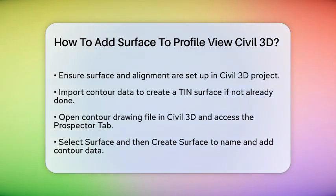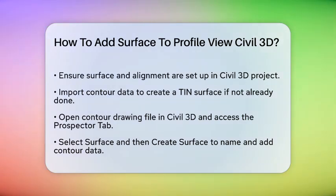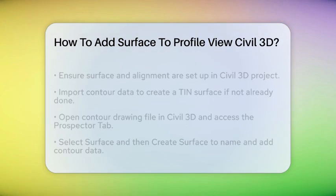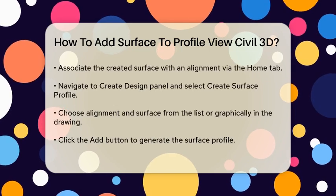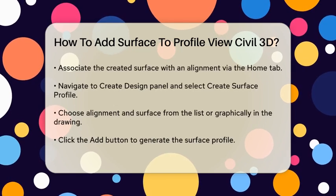To do this, open your contour drawing file in Civil 3D, go to the Prospector tab, select Surface, and then Create Surface. Give your surface a name and add the contour data to it.